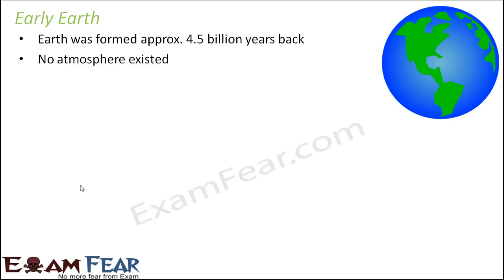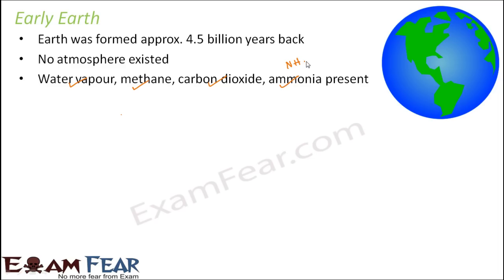Earth was formed approximately 4.5 billion years back. There was no atmosphere at that time. So today we have atmosphere divided into specific layers like troposphere, stratosphere, mesosphere, exosphere, and so on. At that time, there was no atmosphere at all. All that was present in early Earth were water vapor, methane, carbon dioxide, and ammonia. So these were the gases which were present at that time. Ammonia, carbon dioxide, methane, and water vapor.